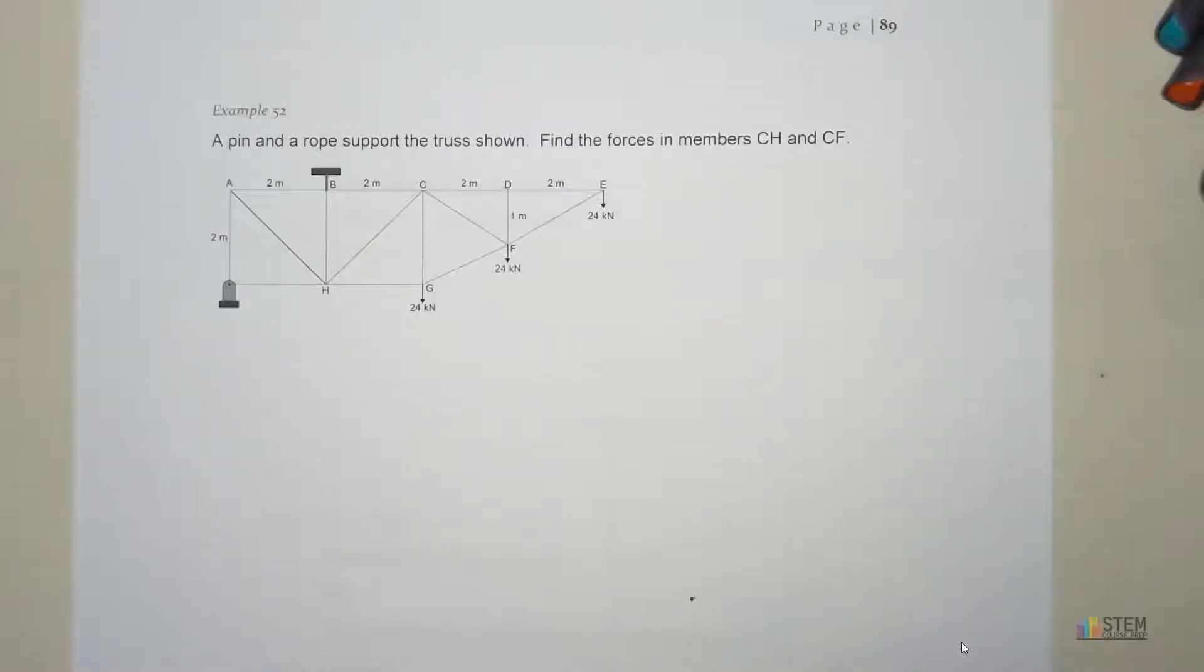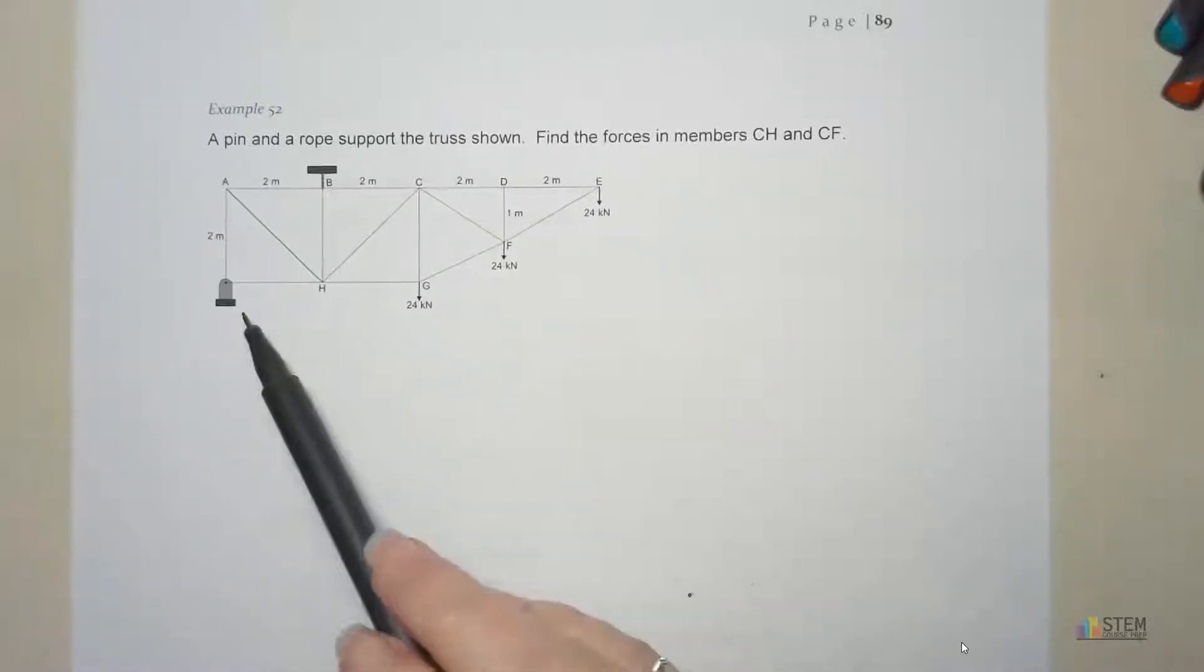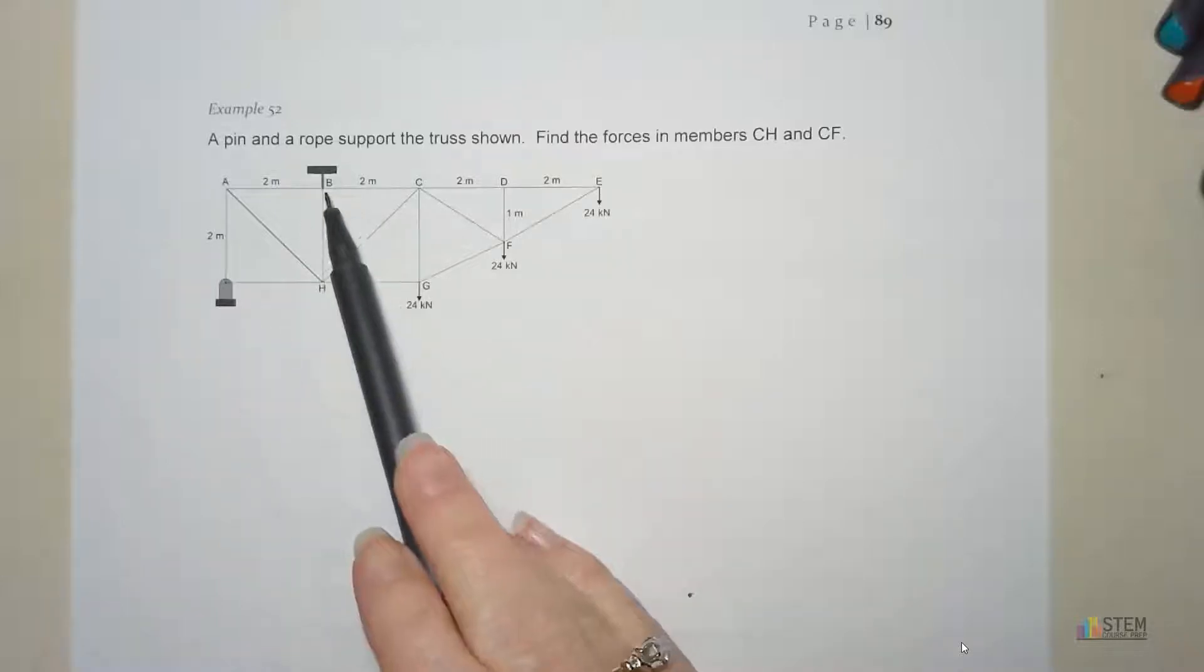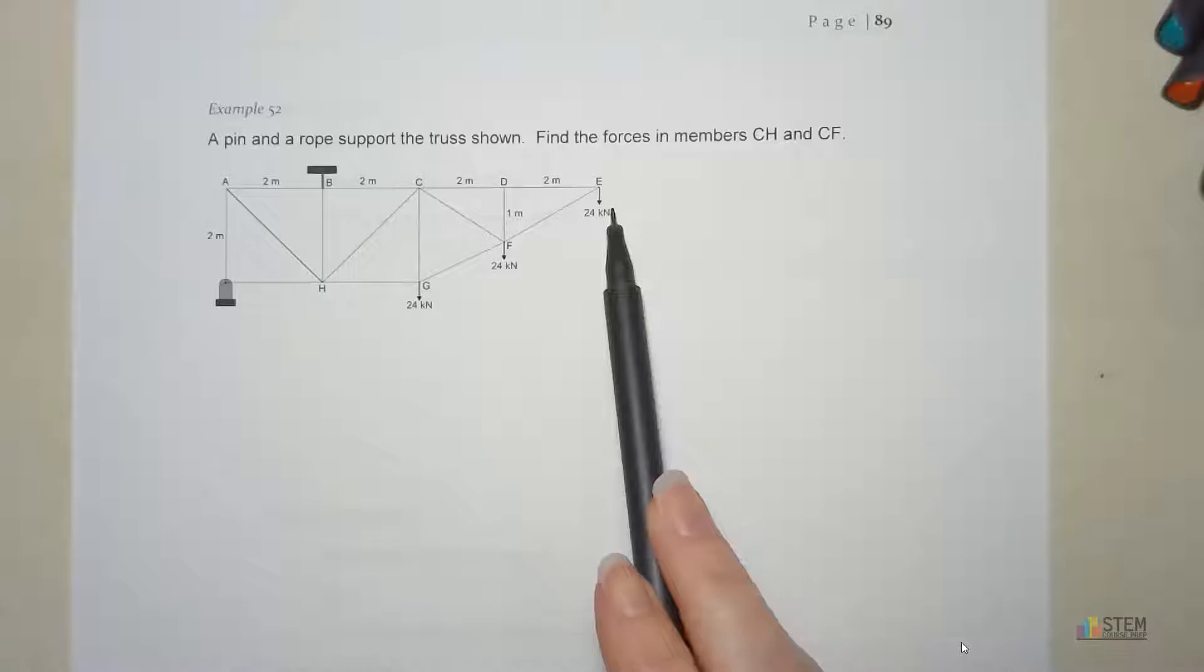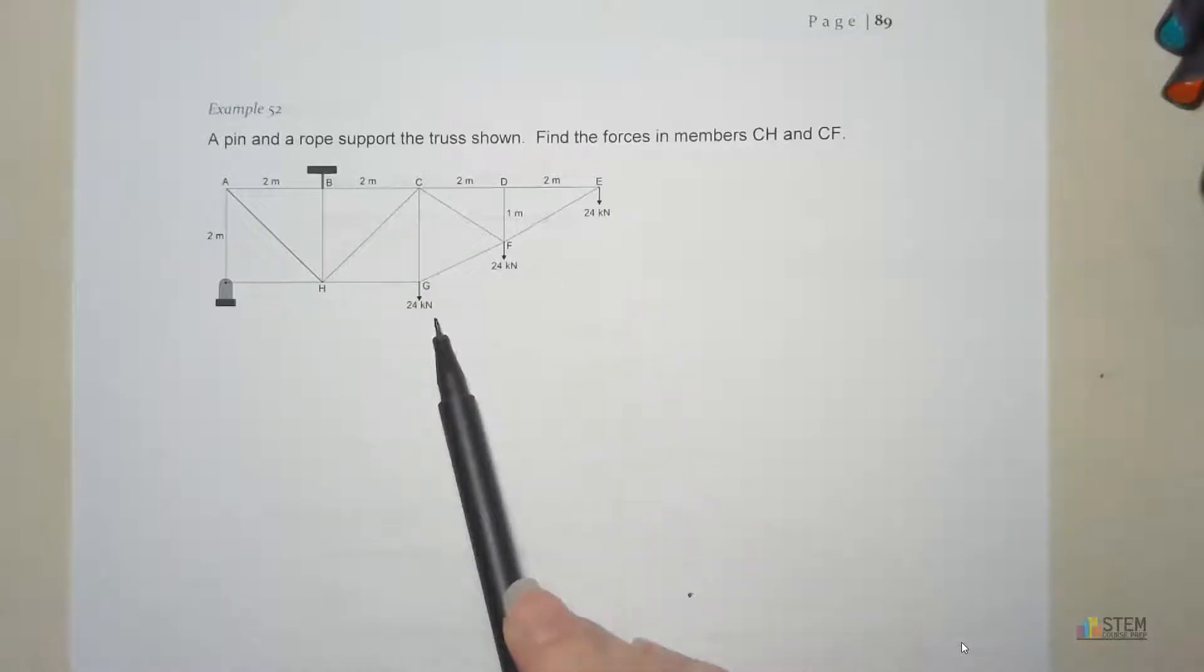Hey guys, we're on example 52. This is going to be for method of sections. Now what we've got here, we have this truss that's shown and it's got a pin and a rope up here supporting it. It's got these loads applied, so three of them, they're all 24 kilonewtons. And what we want to do is we want to find the forces in members CH and CF.